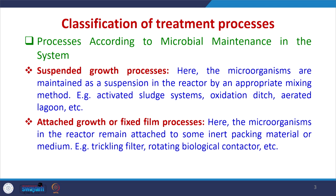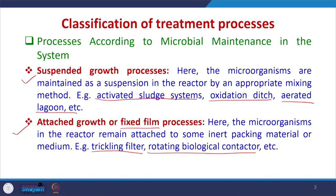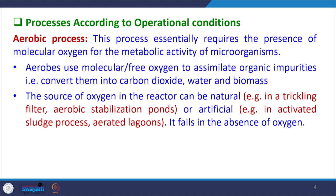There are different classifications of biological treatment processes. According to microbial maintenance in the system, there may be suspended growth processes or attached growth processes. In suspended growth processes, the microorganisms are maintained as a suspension in the reactor by appropriate mixing methods — examples include activated sludge systems, oxidation ditches, and aerated lagoons. In attached growth or fixed film processes, the microorganisms remain attached to some inert packing material; examples include the trickling filter and rotating biological contactor.